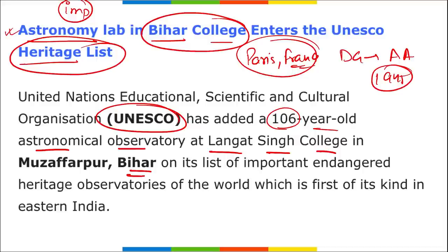This observatory was built in 1916, making it a 123-year-old laboratory. The college is now affiliated to Bhimrao Ambedkar Bihar University. A first-of-its-kind planetarium was also set up in this college in 1946. Remember: the astronomy lab in Bihar's Langat Singh College has entered UNESCO's heritage list.